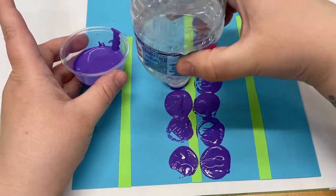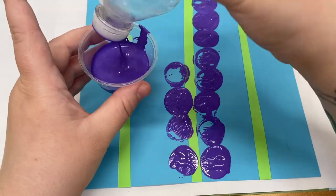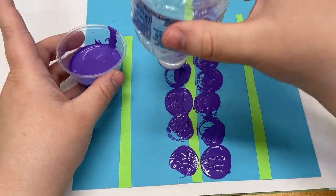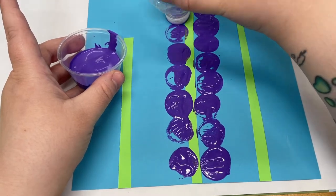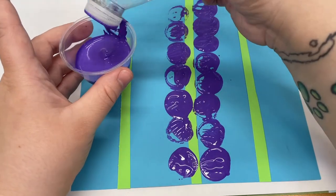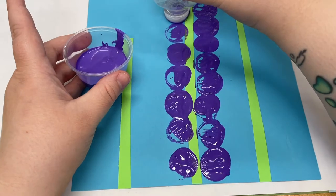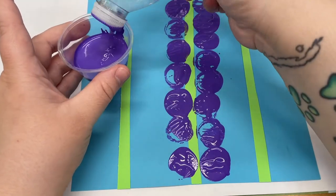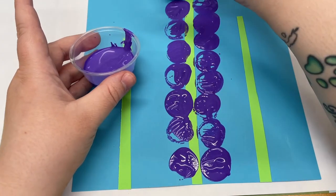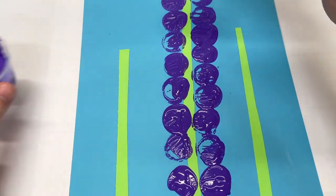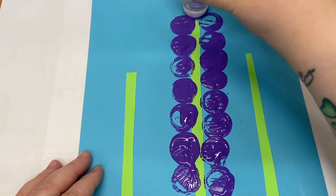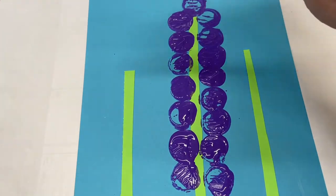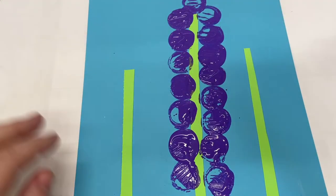They don't have to be a perfect straight line, so don't feel like that's something you need to make sure it happens. We're just going to kind of go up the stem, and then once you get to the top, I just like to put one right at the top. And then we're going to do this for the other two stems.